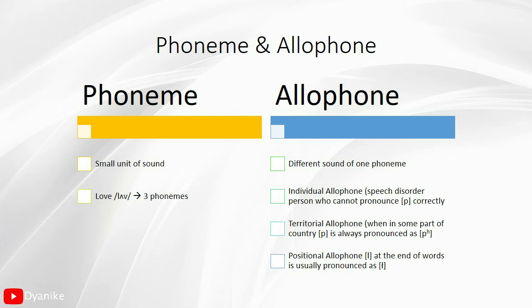There are three kinds of allophone. We have individual allophone, territorial allophone, and positional allophone. When a person has a speech disorder and has difficulty pronouncing 'P' correctly, we call it individual allophone. When people in a certain area or country commonly pronounce 'P' differently, we call it territorial allophone. And if people pronounce 'L' as 'R' and have difficulty with that, we call it positional allophone.